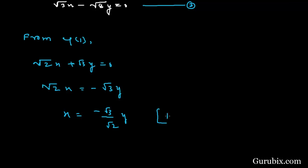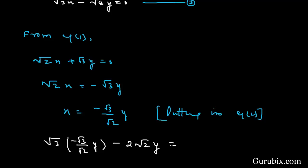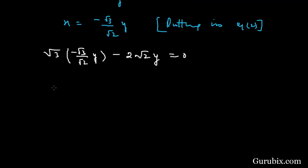Now we substitute this value of x into equation number two: root 3·x minus root 8·y equals 0. Substituting x equals minus root 3 over root 2 times y, and noting that root 8 equals 2 root 2, we get minus 3y over root 2 minus 2 root 2·y equals 0.